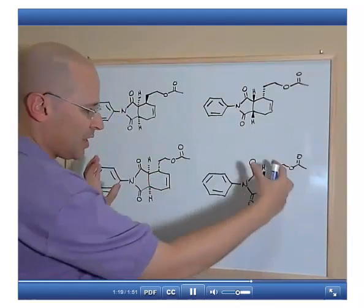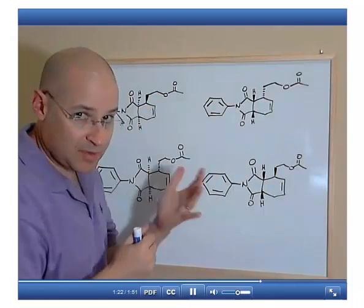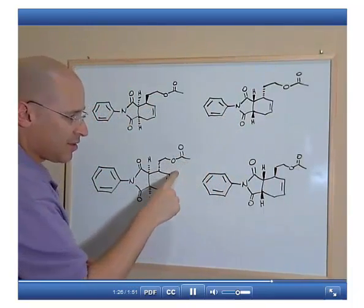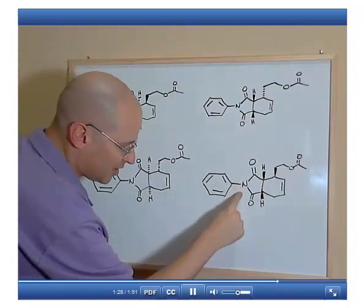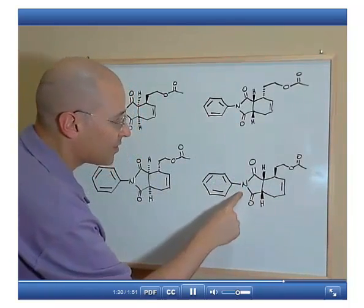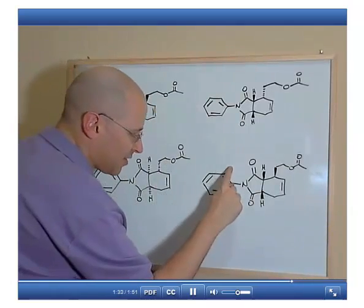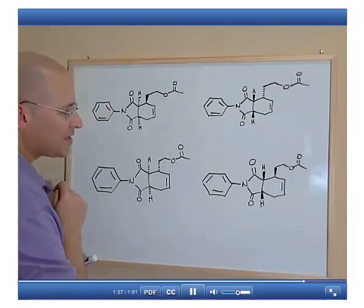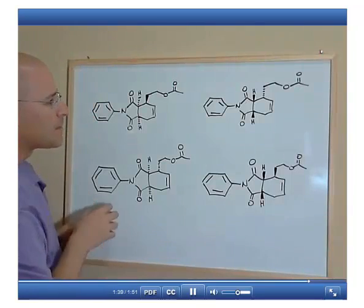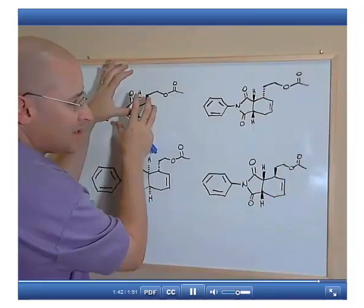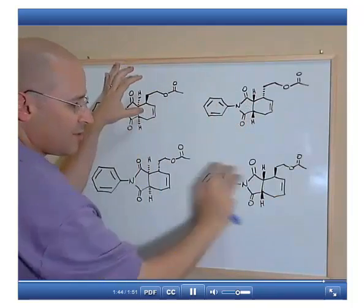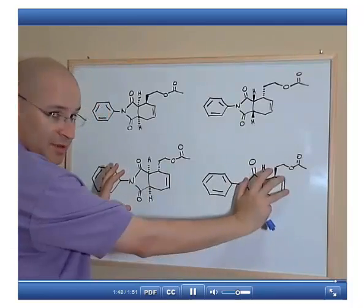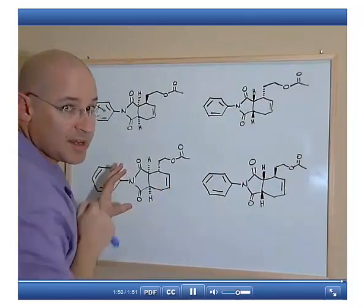The relationship between these two compounds and these two compounds is as follows: this compound is a diastereomer of this compound and a diastereomer of this compound. This compound is a diastereomer of this compound and a diastereomer of this compound. In other words, this compound here has only one enantiomer — this compound — and the other two are diastereomers. This compound here has only one enantiomer, this one, and the other two are diastereomers.